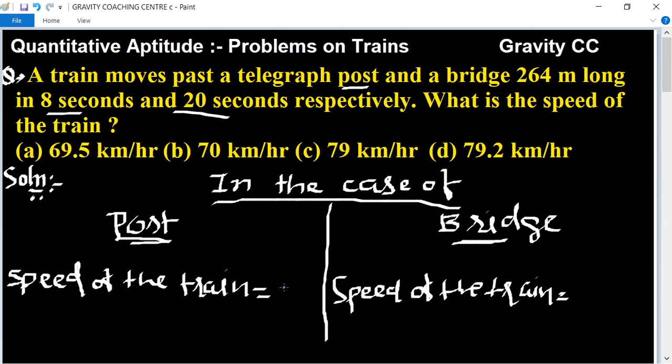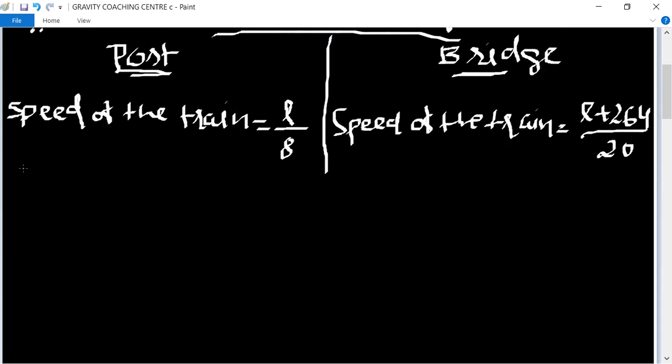speed of the train equals length of the train upon time taken, so time taken is 8 seconds. And another is length of the train plus length of the bridge, 264, upon its time of 20 seconds.